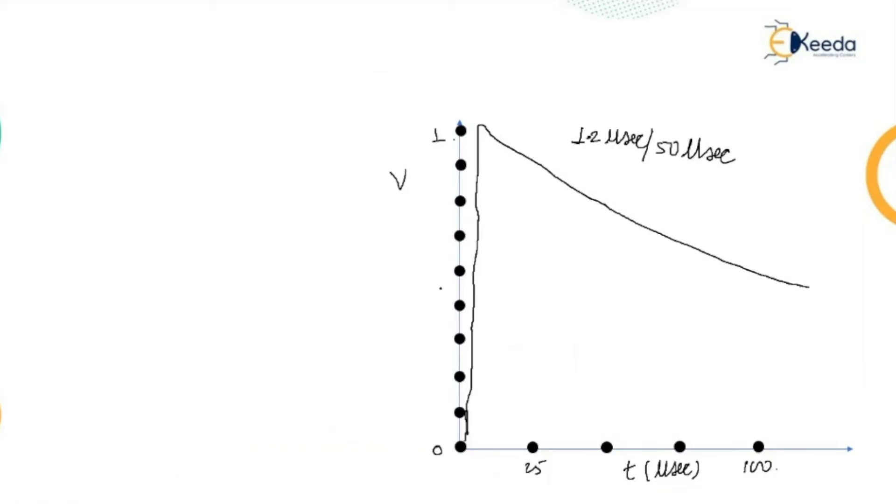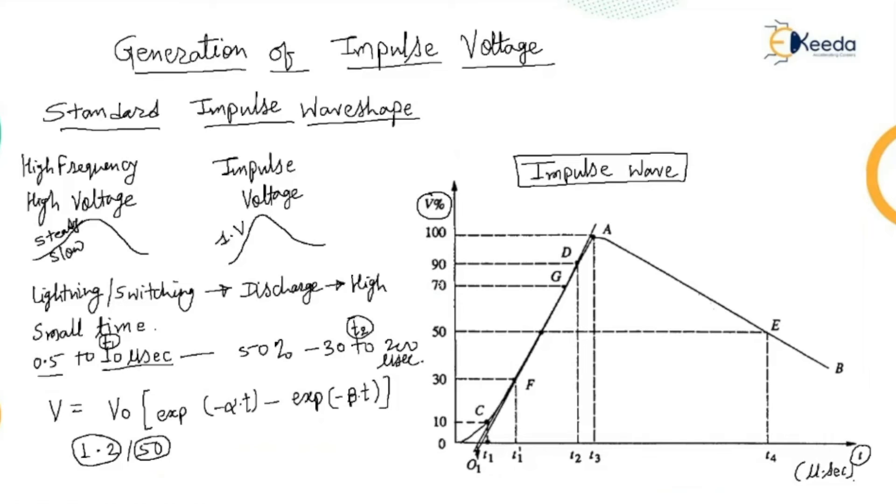So, referring to this waveshape, the peak value is reached. Peak value A is fixed and referred to as 100% value. The points corresponding to 10% and 90%, so 10% and 90% of the peak values are located in the front portion, points C and D. So, this is points C and D. The line joining these points is extended to cut the time axis at O1. That cuts the point at O1. So, O1 is taken as the virtual origin. O1 is taken as the virtual origin. So you can see here that the virtual origin is shown here.